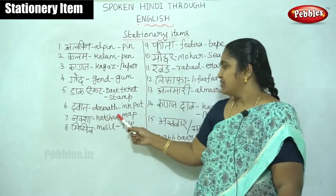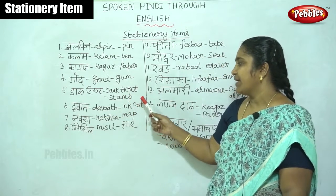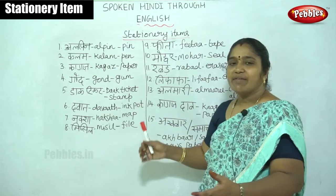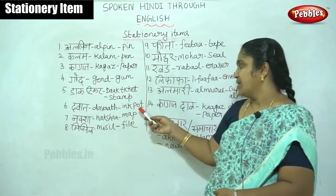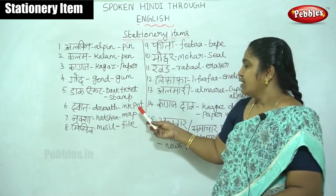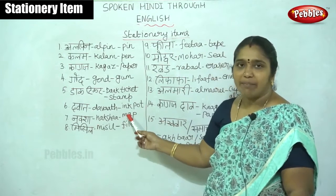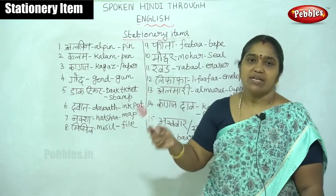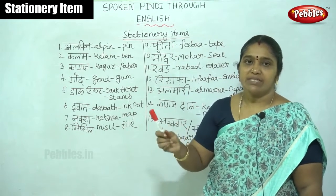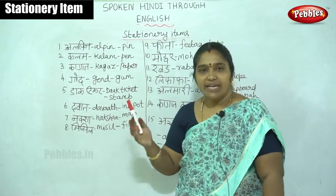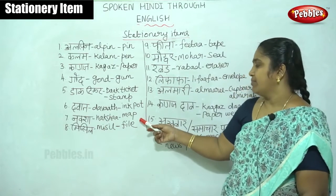Dawath is ink pot. We can have many types of colorful inks today. Then nakshah — nakshah is map. While plotting the places, rivers — Ganges, hills — we need the map.